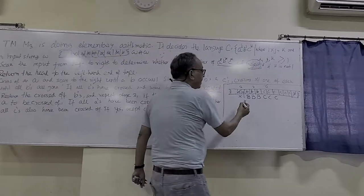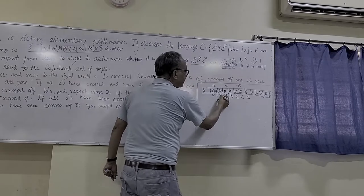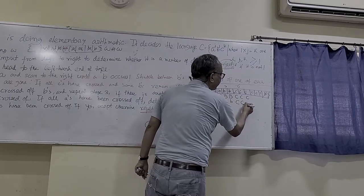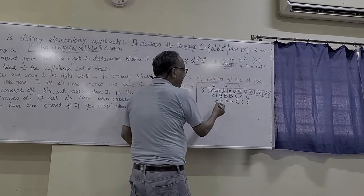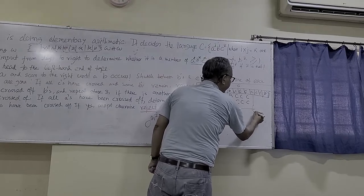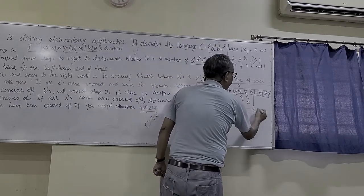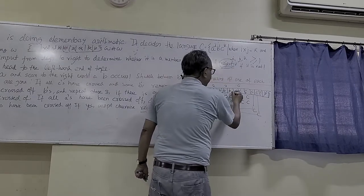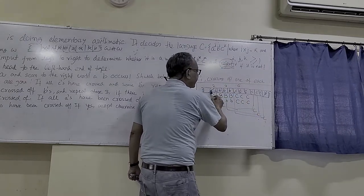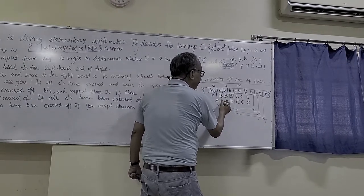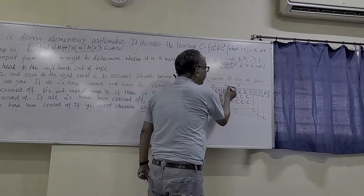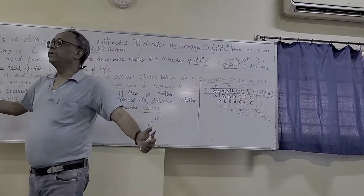Then this second A is also crossed. After both A's are crossed, it comes back to B. It converts the B back and checks remaining C's. Then that B becomes capital C. It checks all the capital V's and C's. When everything is crossed, that means 2 times 3 equals 6. This is what the simple Turing machine does.